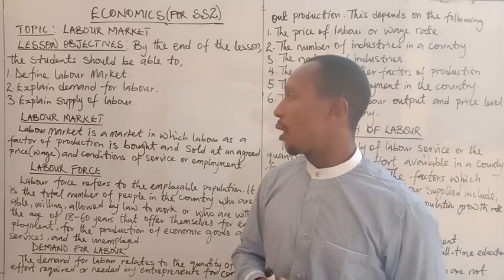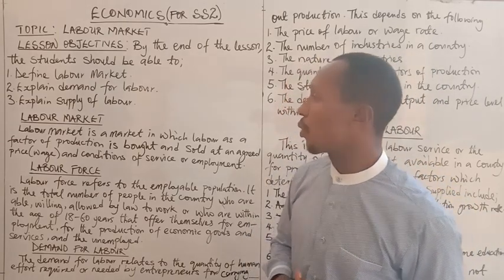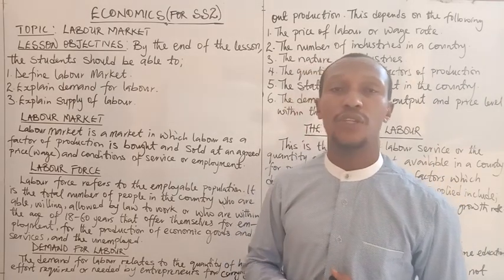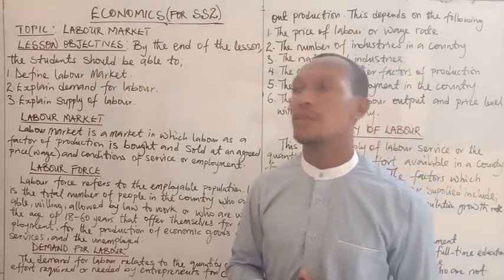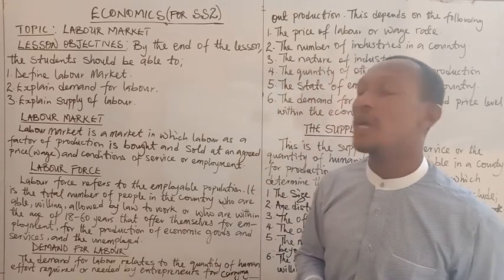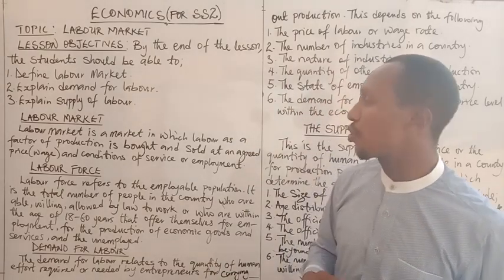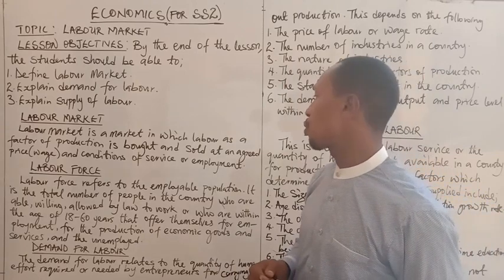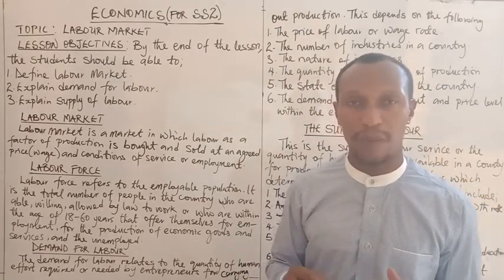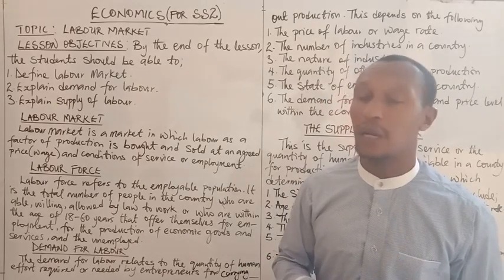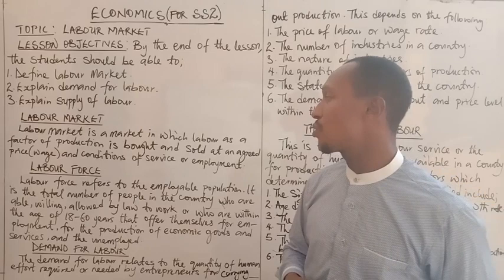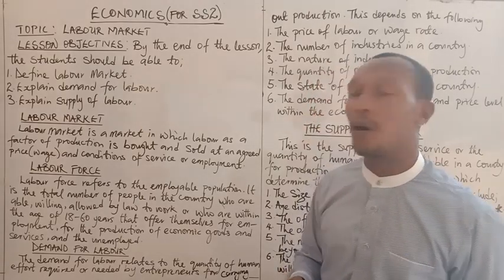As we proceed, we are going to look at the labor market — the definition of labor market. Labor market is a market in which labor, as a factor of production, is bought and sold at an agreed price. That agreed price is the wage and the salary, and the conditions of service or employment.